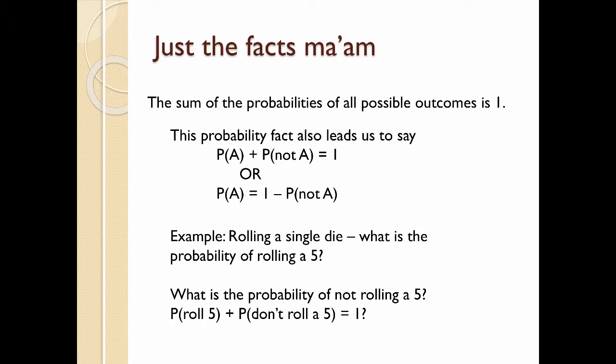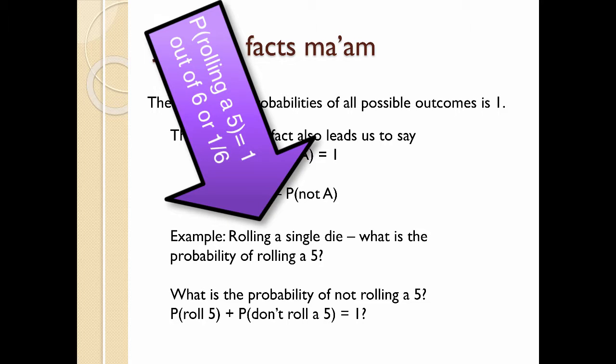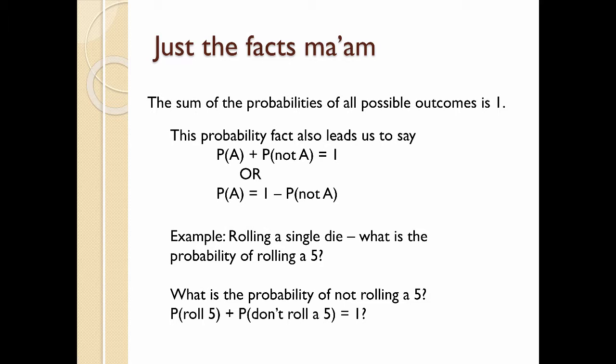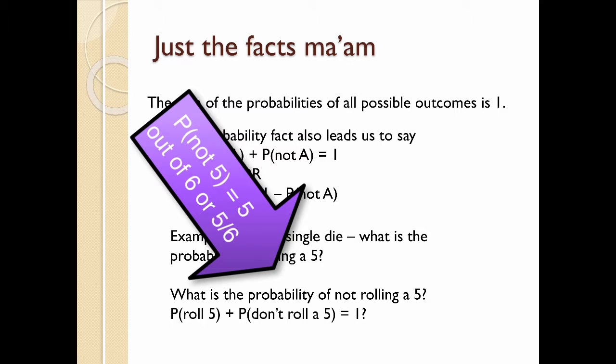So given that the sum of all probabilities of all possible outcomes is one, this leads us to say that the probability that an event will occur plus the probability that it won't occur is one. So for example, rolling a single die, what's the probability of rolling a five? So by now, you'll probably are saying it's one sixth. Well, what's the probability of not rolling a five? Well, not rolling a five means you're going to roll one of those other numbers. There happens to be five other numbers. So that would be five out of six. So you have one out of six plus five out of six is equal to one.